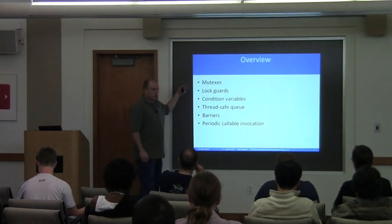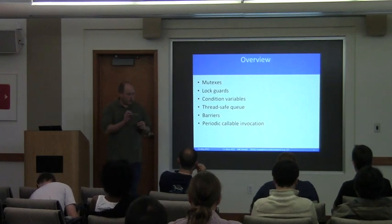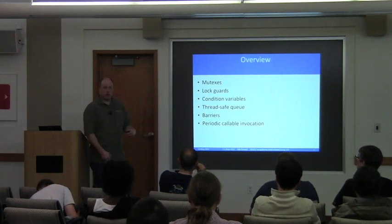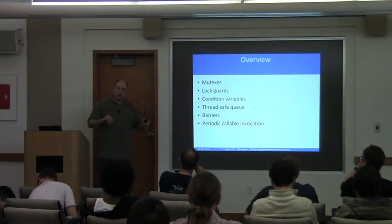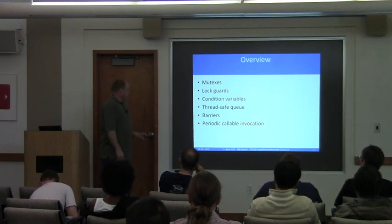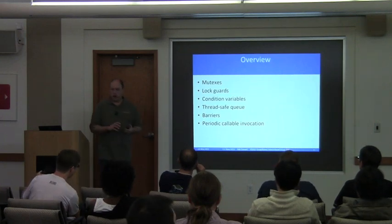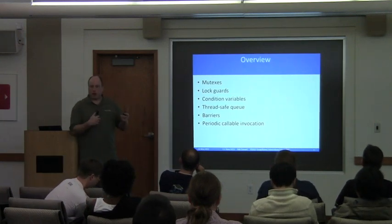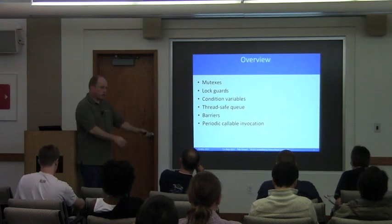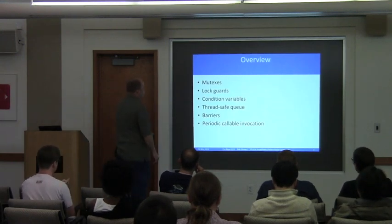I'll be talking about mutexes, lock guards, and condition variables. If you're in my other talk, it'll be slightly review, but mostly this is just showing actual code using them. We'll develop a thread-safe queue — just an example — talk about barriers, another way of using some of this stuff: periodically invoking a task on some sort of regular schedule, and some issues in doing that.